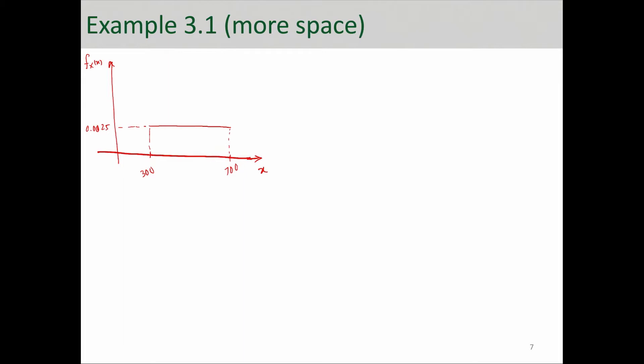For part B, we first check the non-negativity condition. And that means f of X needs to be greater than or equal to 0. Well, we know that when X is less than 300, f of X is equal to 0.